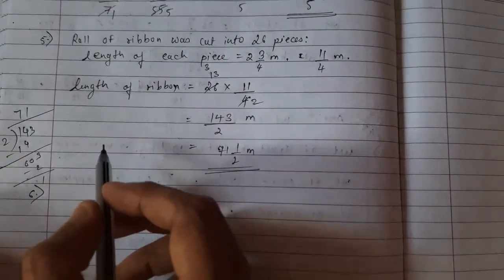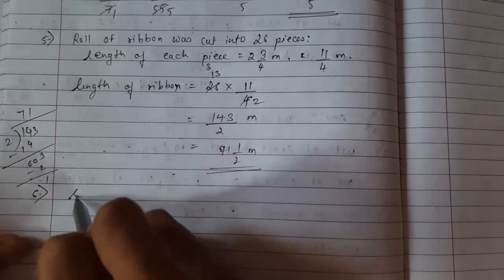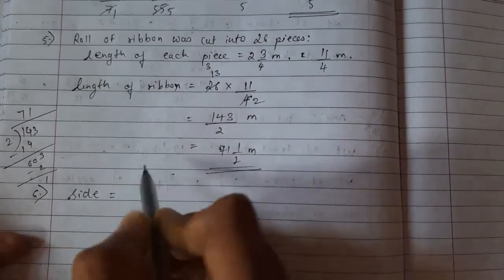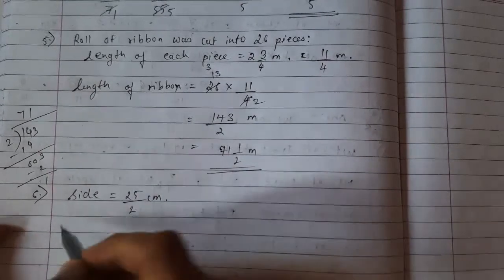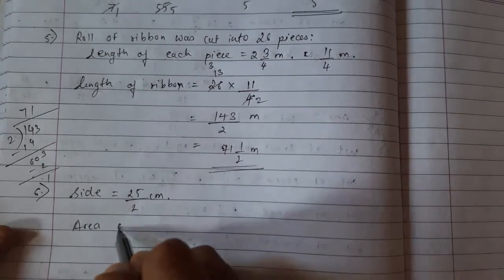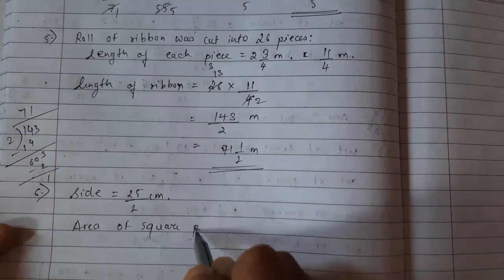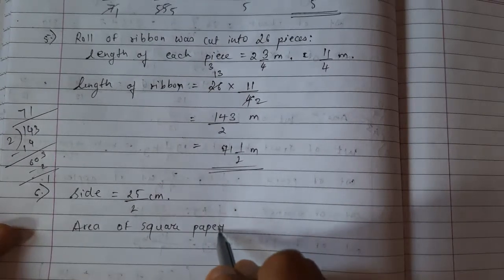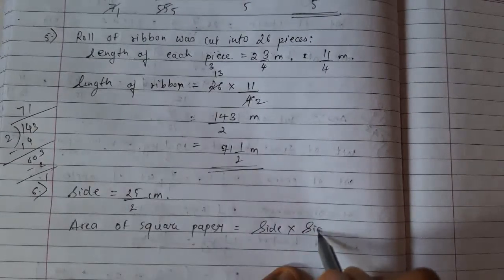Sixth question: Find the area of square paper of side 25 upon 2 centimeters. Side is given. Very easy. Area of square - what is formula of area of square? Side into side. This is formula.